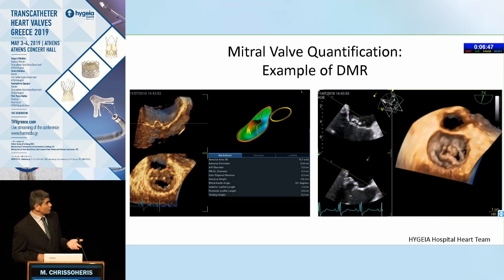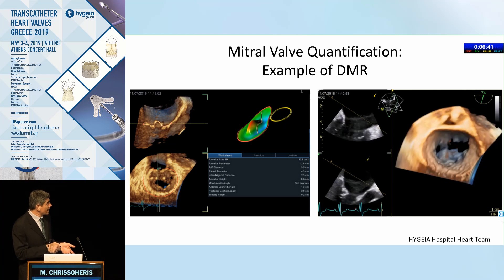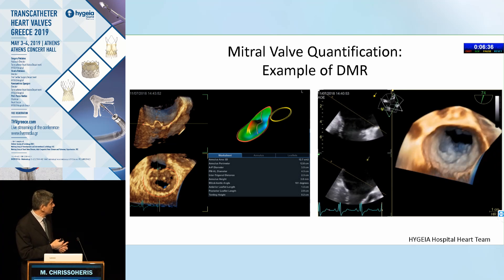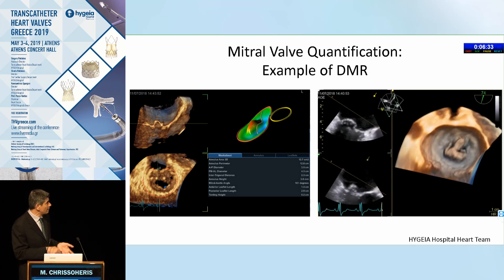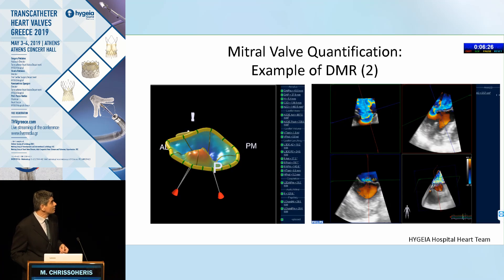Before going to surgery, we can provide the surgeon with multiple information based on 3D echocardiography — the annulus area, the perimeter of the annulus, the anterior-posterior and septolateral diameter, and the intertrigonal distance. These are detailed parameters that may have an impact on the repair procedure.